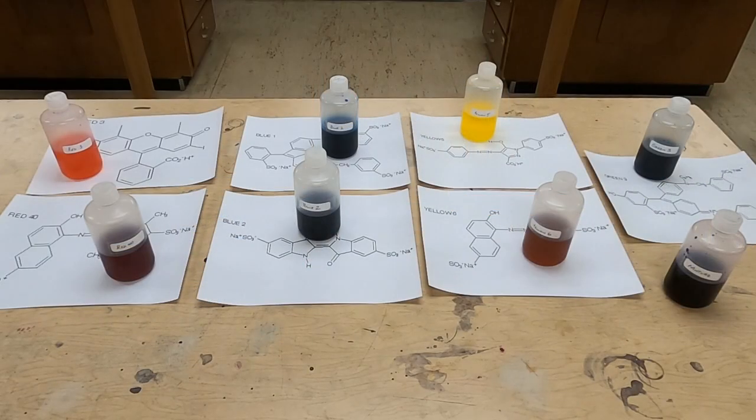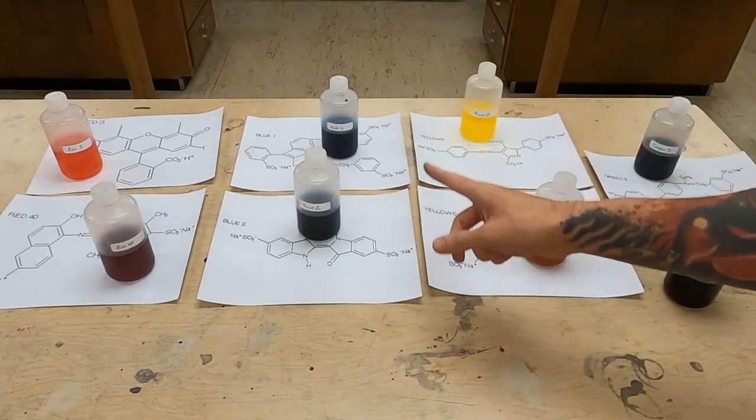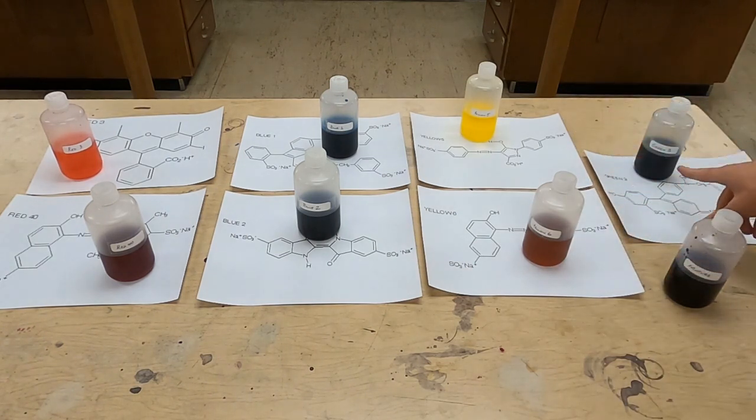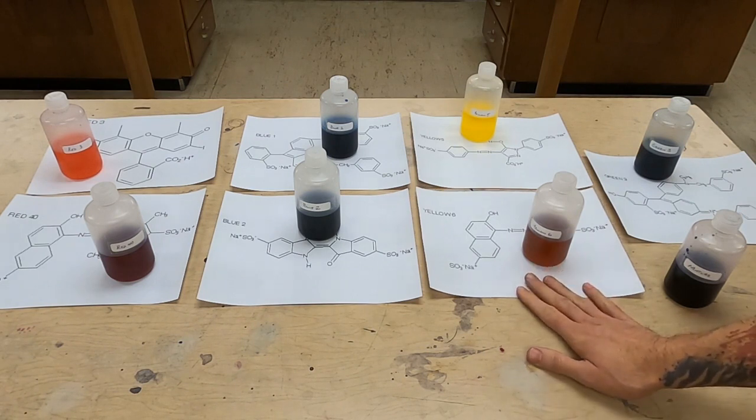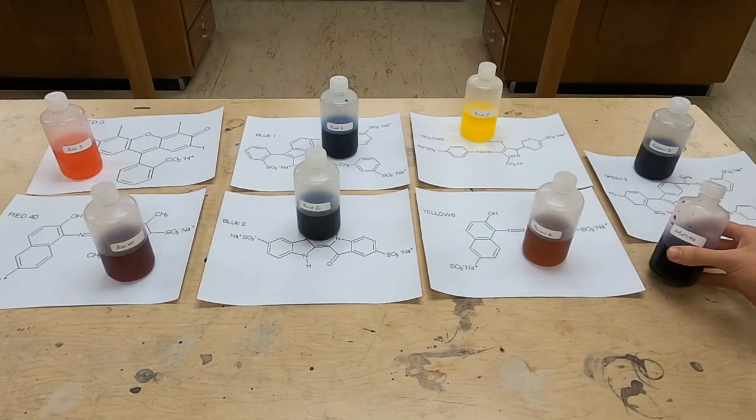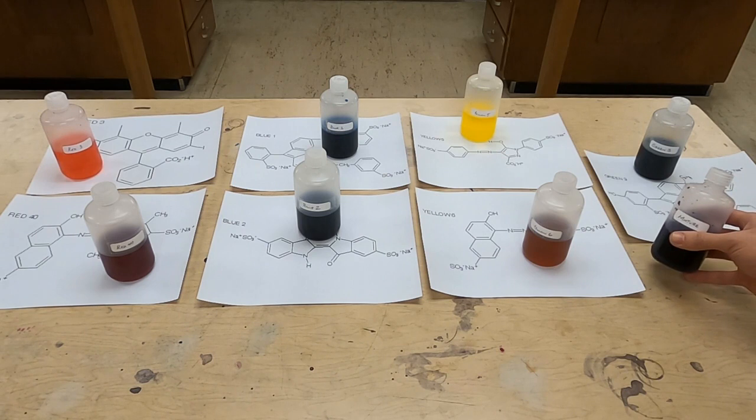So here I've got all seven of the pure samples mixed up, as well as the mixture here. There are two reds, red 3 and red 40. There are two blues called blue 1 and blue 2. There are two yellows called yellow 5 and yellow 6. And there's a green called green 3. They're all sitting on top of diagrams that show their molecular structure. The mixture we'll find out in a little bit as we test the pure samples and compare it to the mixture in spectrophotometry, or what colors of light each of these will allow to pass through a solution of it, or which colors of light get absorbed.